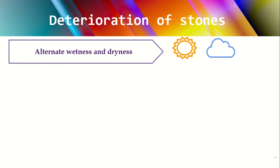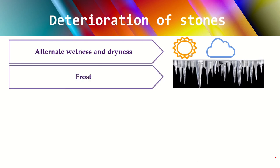The first cause is alternate dryness and wetness. Generally, a stone becomes wet by agencies like rain, frost, dew, etc. When this wet surface becomes dry with the help of sunlight or sunshine, the surface is alternatively becoming wet and then dry. It is found that stones subjected to such alternative wetness and dryness are wearing out and decaying very quickly.